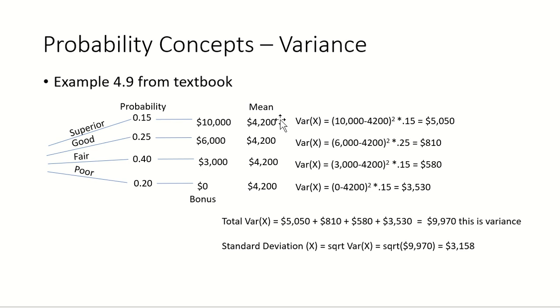15% chance that the variance is going to be $10,000 minus $4,200 squared. That's $5,050. $6,000 is the data point here. The mean is $4,200. $6,000 minus $4,200 squared times 0.25 is $810. We continue here and here. The total variance is the sum of all of these values.